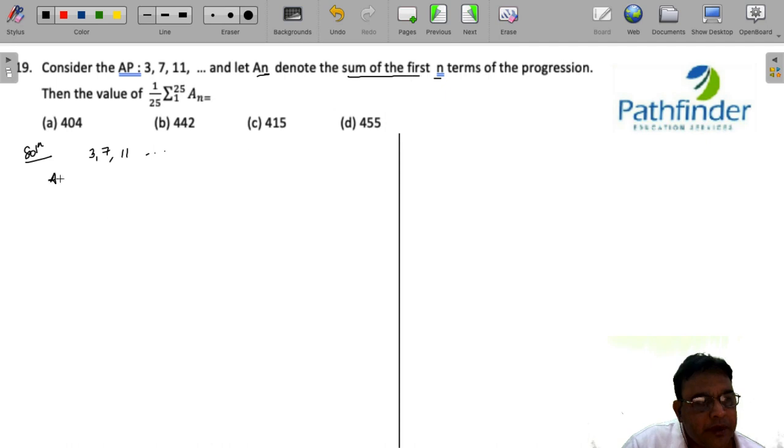So let us say a_n is equal to n/2 times [2a + (n-1)d], where n is the number of terms, d is the difference 7 minus 3, 11 minus 7, that is 4. So we put the value of a as 3 and d as 4.